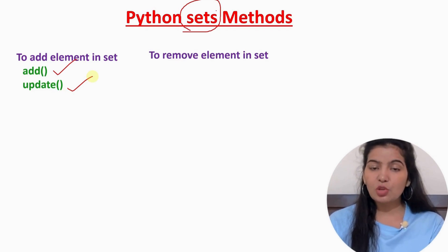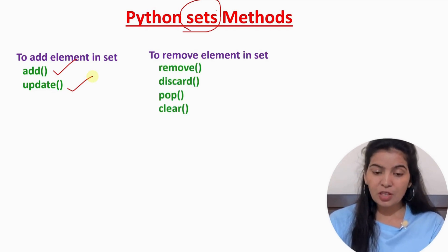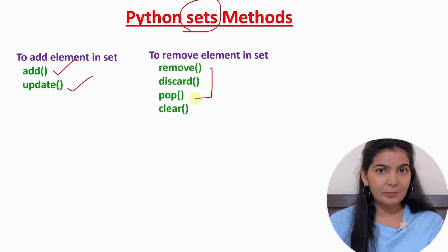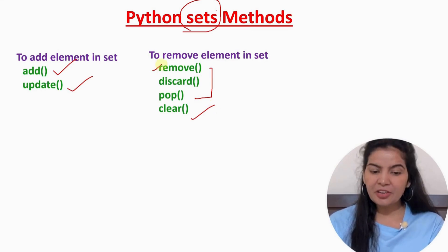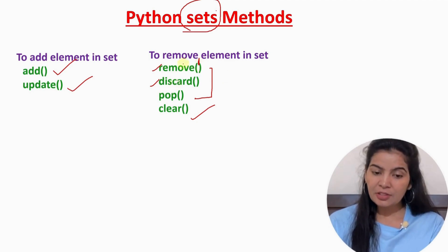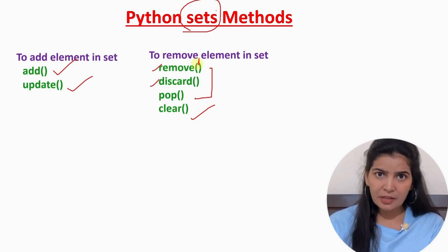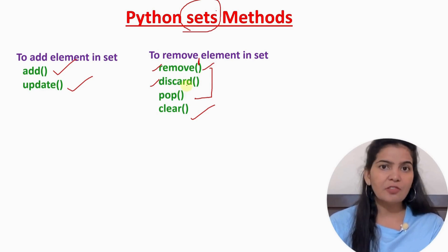Now let's see some methods that we can use to remove elements from the set. There are four methods available. Remove, discard, and pop methods will remove only one element from the set at a time. And we can use the clear method if we want to remove all the elements from the set. In remove and discard, we have to pass the element or item that we want to remove from the set. But if the element is not present in the set, the remove method will give an error.